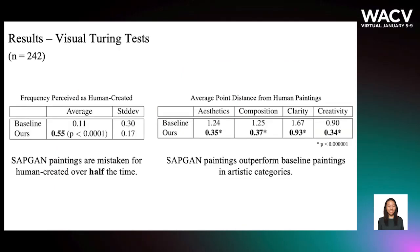To test our qualitative claims, we recruit 242 participants for a visual Turing test study. Each participant is asked whether a given painting is human or computer-created. Results show that SAPGAN paintings are mistaken for human-created over half of the time, with a 55% frequency. SAPGAN paintings also significantly outperform baseline paintings in artistic categories such as aesthetics, composition, clarity, and creativity.